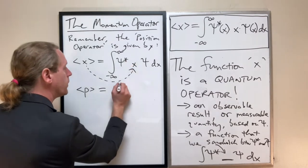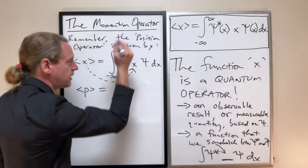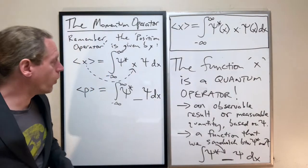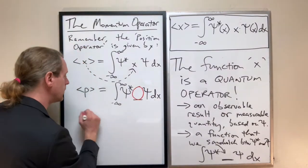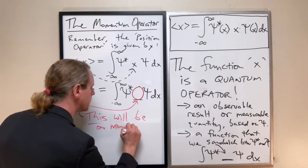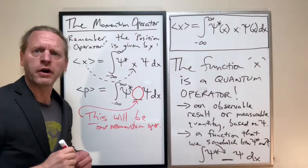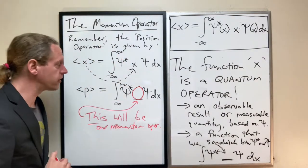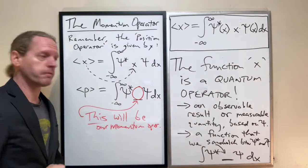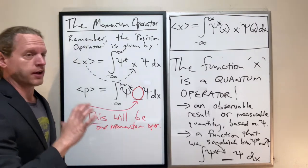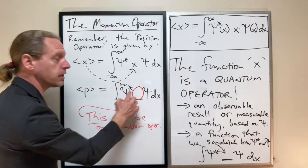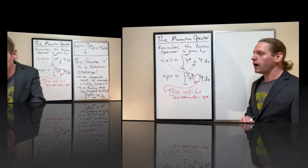So this is going to be the momentum operator. Once we find what this sandwichy thing is going to be, we're gonna take the same integral of psi star times some unknown function times psi dx. Whatever function that we end up placing inside here, this will be our momentum operator. We're gonna find some function that goes in there that will give us the answer - what is the most likely momentum of the particle.